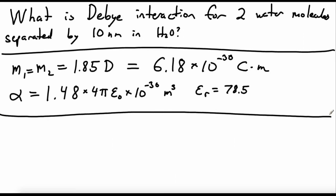So first we have to look up the dipole moments and polarizabilities for water. So the polarizability volume for water is 1.48 times 4 pi epsilon naught times 10 to the negative 30 meters cubed. And the interaction constant for water is 78.5.